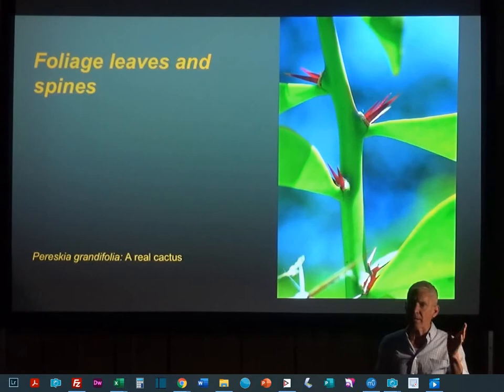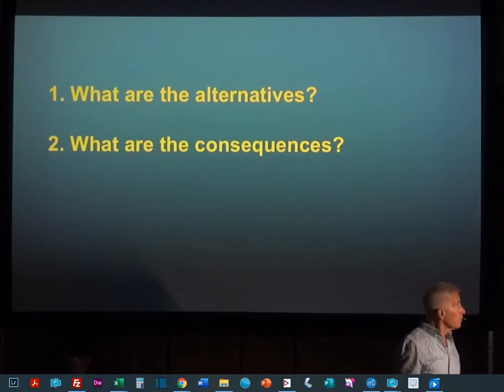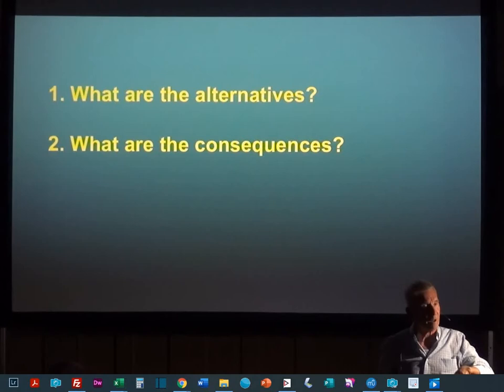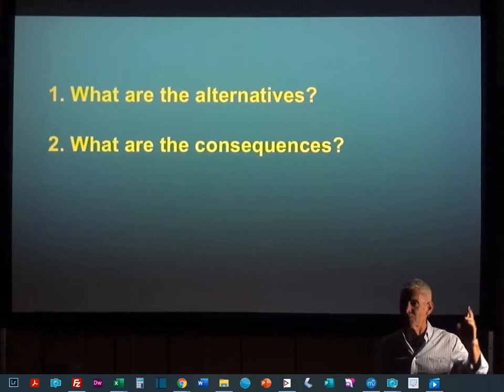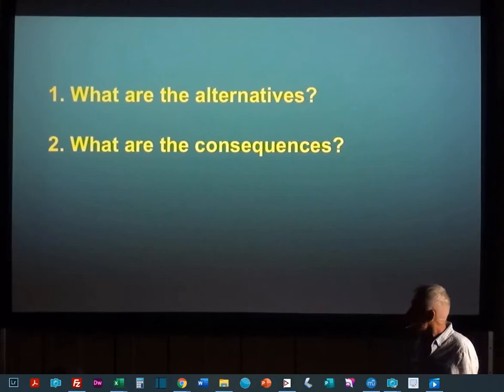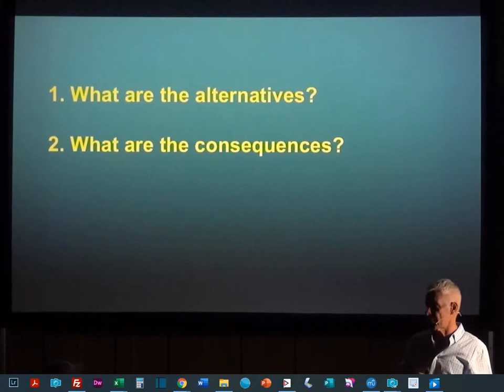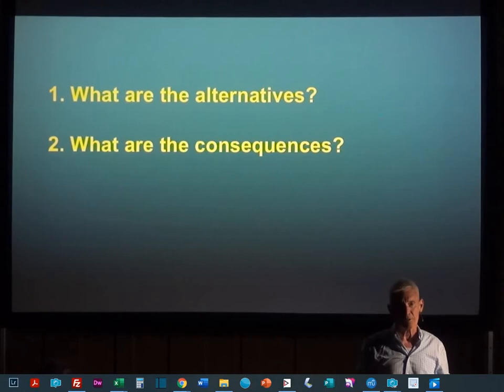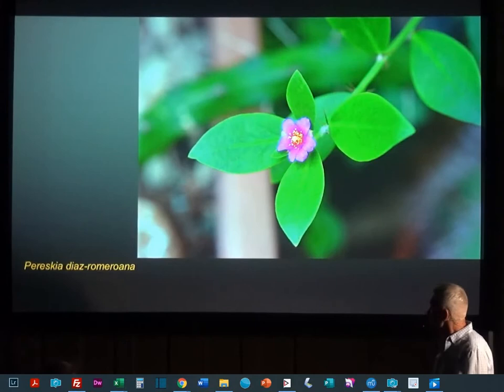I'd like to talk about how cacti evolved to be the leafless things that we think about. Before I do that, there are two questions — really powerful questions you can use any time in your life. What are the alternatives? Are there more than one way of doing things? And if there are, what are the consequences of each of those alternatives? I'll try to ask those questions during this talk.